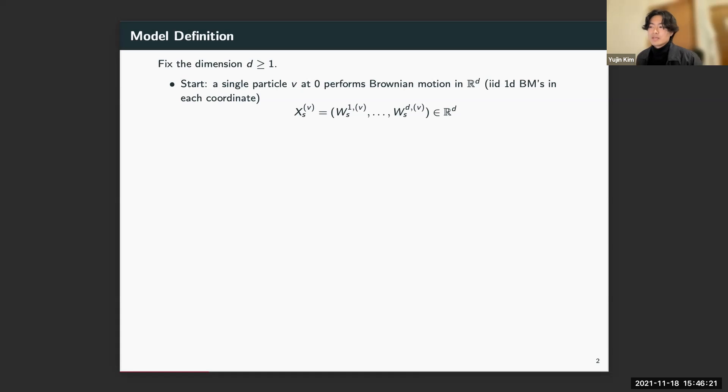I'll usually write a superscript v or u to denote a particle, and X^v denotes the Brownian motion path of v. Each particle carries with it an alarm clock that rings with rate one.